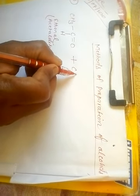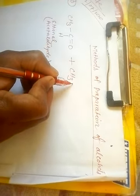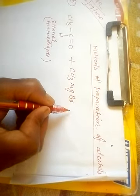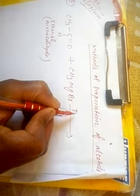Acetaldehyde, CH3CHO, reacts with RMgX. So we have CH3CHO reacting with RMgX in dry ether.